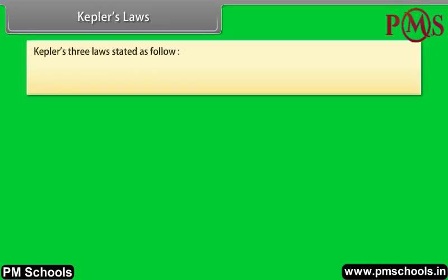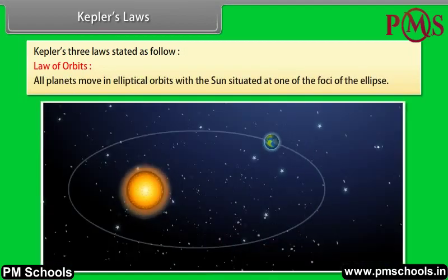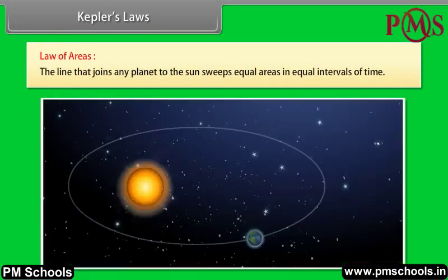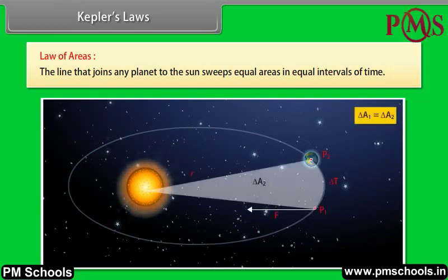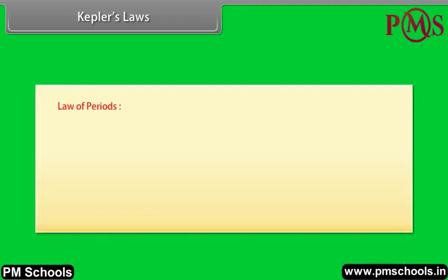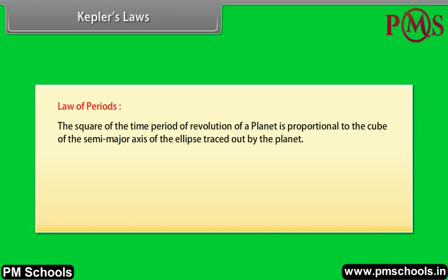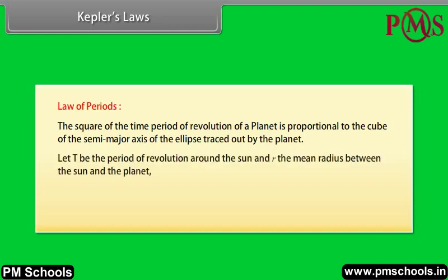Kepler gives three laws. Law of orbits: all planets move in elliptical orbits with the sun situated at one of the foci of the ellipse. Law of areas: the line that joins any planet to the sun sweeps equal areas in equal intervals of time. This comes from the observation that planets appear to move slower when they are farther from the sun. Law of periods: the square of the time period of revolution of a planet is proportional to the cube of the semi-major axis of the ellipse traced out by the planet. Let T be the period of revolution around the sun and r the mean radius; T² is directly proportional to r³, i.e., T² = kr³.